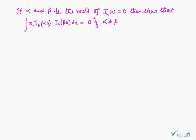Now we are going to prove the orthogonal property of Bessel's function, which states: if alpha and beta are the roots of J_n(x) = 0, then we have to prove that the integration of x·J_n(αx)·J_n(βx) dx is equal to 0, where alpha is not equal to beta, and the integrating limits are 0 to 1.